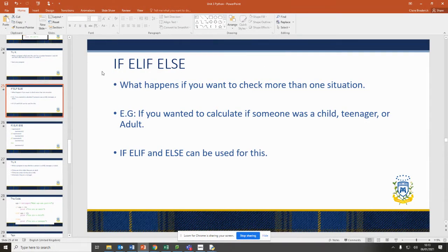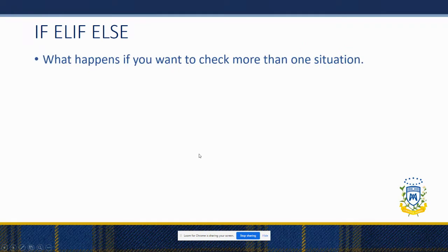So in the previous tutorial we looked at if and else. This time we're adding in an elif. What we're looking at is what happens if you want to check more than one situation. In the previous task we looked at if it's above five or below five, but what if it is equal to five?